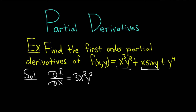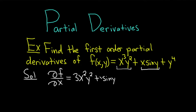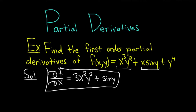In the next term, x·sin(y), the sin(y) is treated as a constant, so we simply differentiate x, which gives us 1, leaving us with sin(y). The last piece, y⁴, its derivative with respect to x is zero. So our final answer for ∂f/∂x is equal to 3x²y² + sin(y).